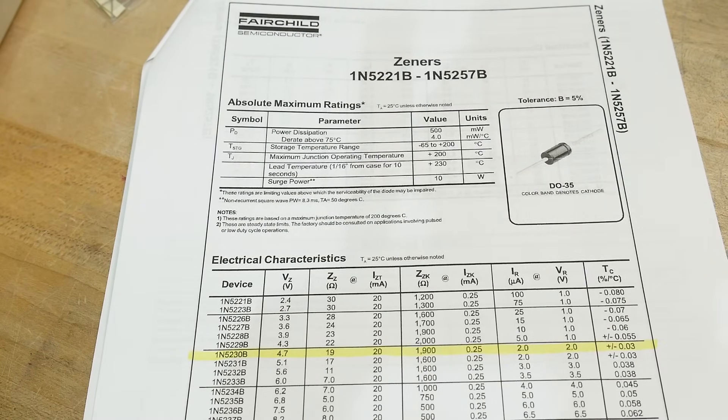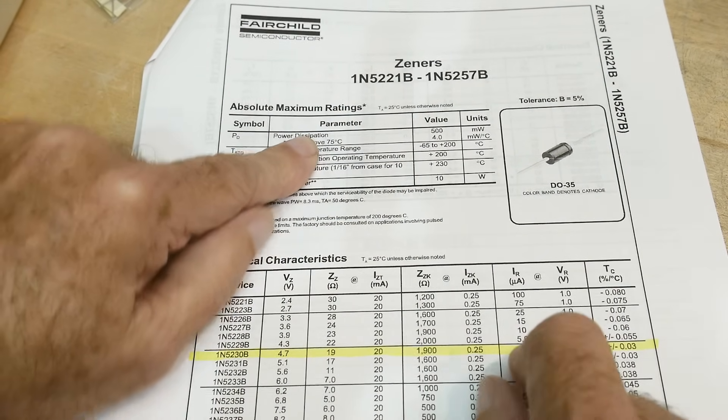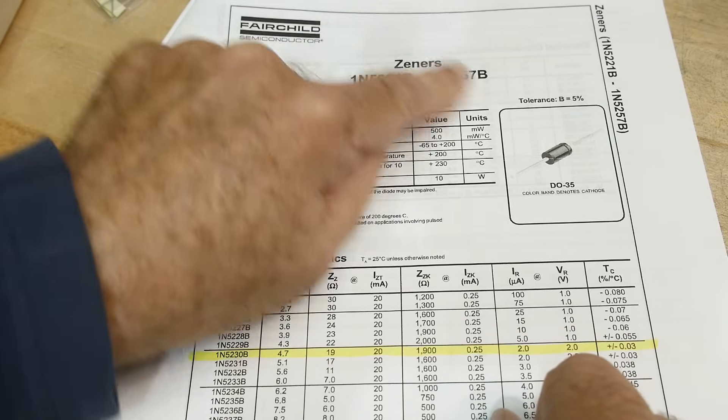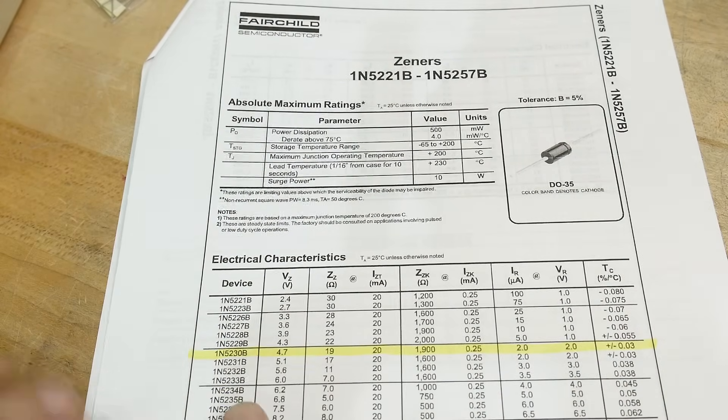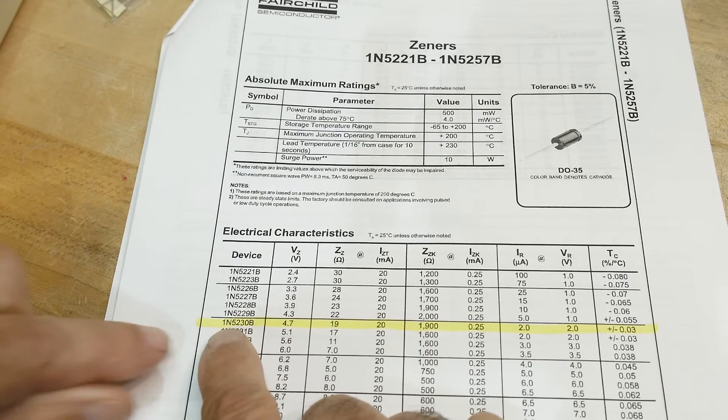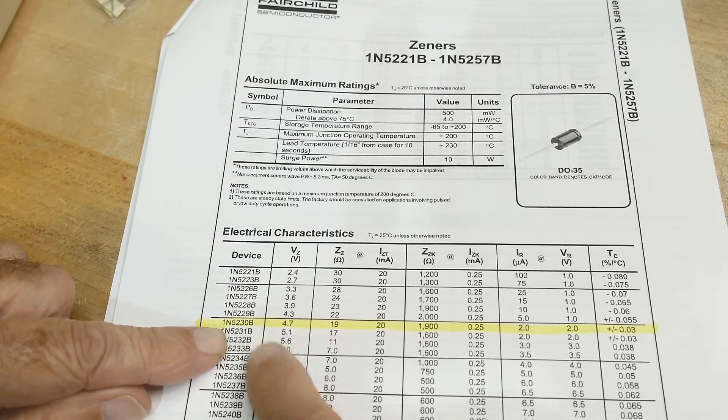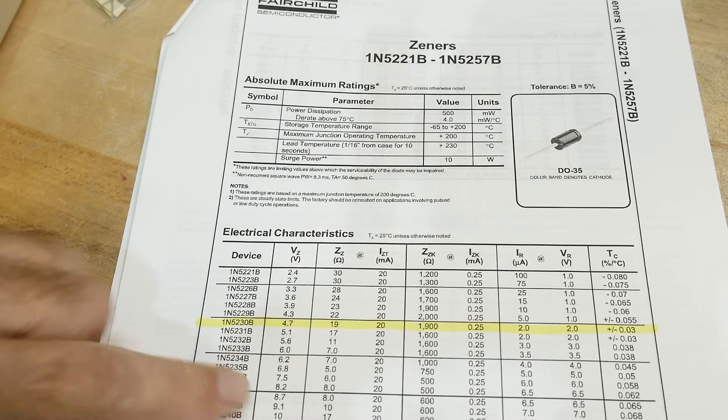All right, today we're going to talk about how do you read the data sheet of a Zener diode. And so we have a 1N5230, and so that comes on a single page here with multiple devices, and I have highlighted here the 1N5230.